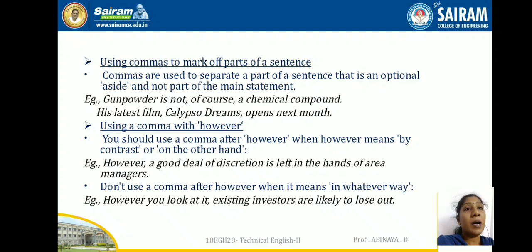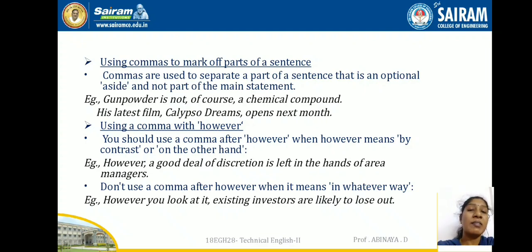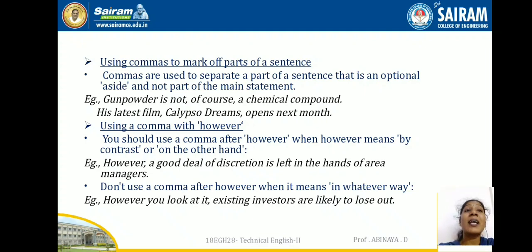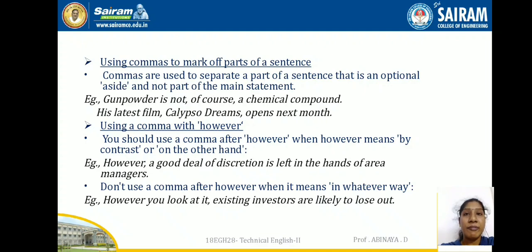Using commas to mark off parts of a sentence: commas are used to separate optional information that is not part of the main statement. For example: 'Gunpowder is not, of course, a chemical compound.' The phrase 'of course' is optional. Another example: 'His latest film, Calypso Dreams, opens next month.' The film name is extra information set off by commas.